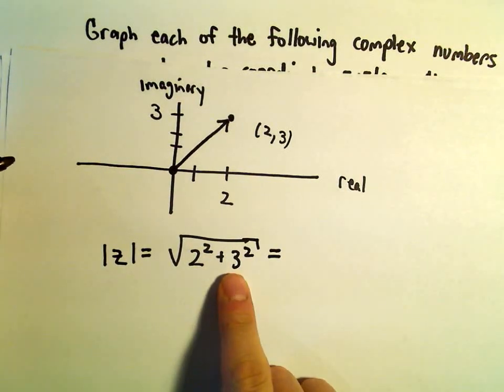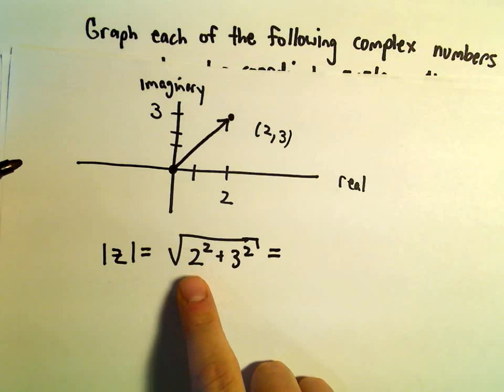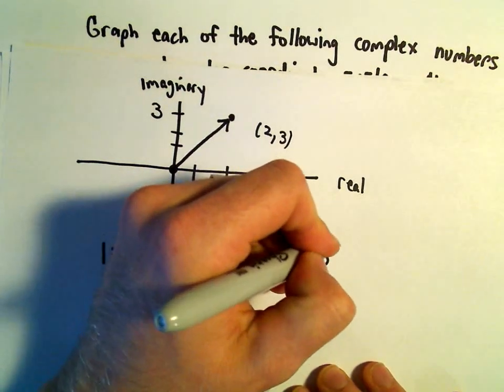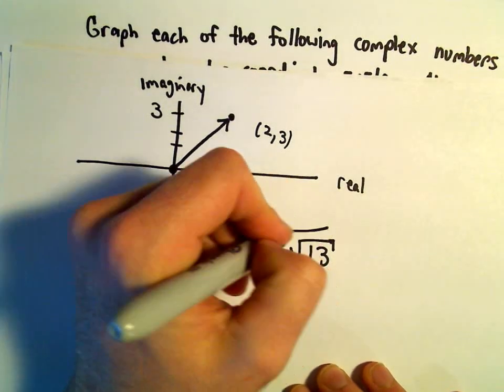So this will be 2 squared is 4 plus 9. 4 plus 9 will give us the square root of 13, and that would be our modulus in this case.